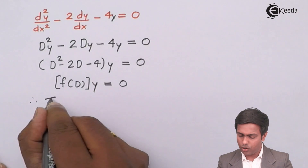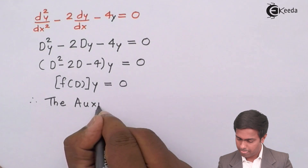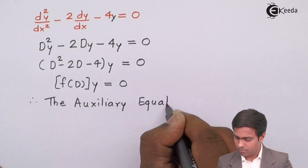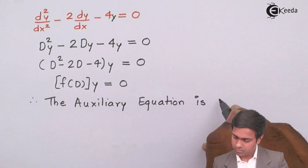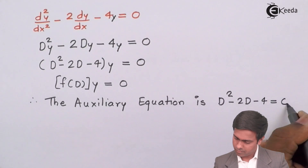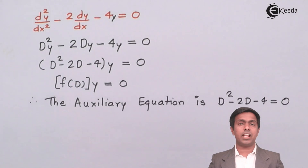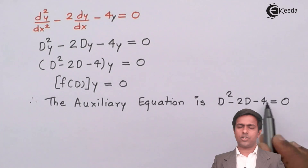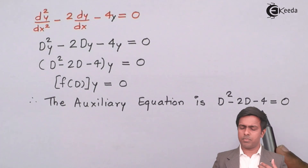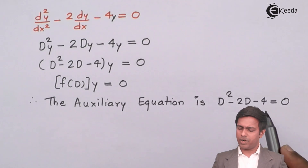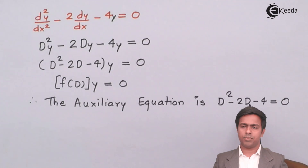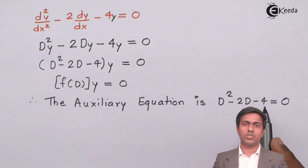Therefore, the auxiliary equation is f(D) = 0, that is D² − 2D − 4 = 0. This is a quadratic equation. To find the roots, we check if −4 can be factored as −2 × 2 or −4 × 1 to match the middle term −2, but we are not getting this term either way. So we will find the roots of this equation using the quadratic formula.